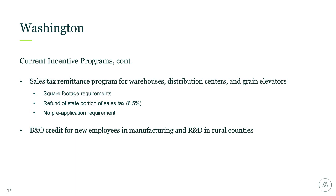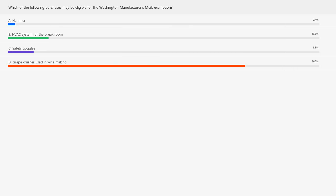Our first polling question: which of the following purchases may be eligible for the Washington Manufacturer's M&E exemption? A, a hammer; B, HVAC system for the break room; C, safety goggles; or D, a grape crusher used in winemaking? Most answered D, the grape crusher used in winemaking, and that's the correct answer. A hammer wouldn't qualify — it's a handheld tool. The HVAC system for the break room isn't directly related to manufacturing. Safety goggles raise questions around direct use in manufacturing and useful life, but the grape crusher used in winemaking would definitely qualify.